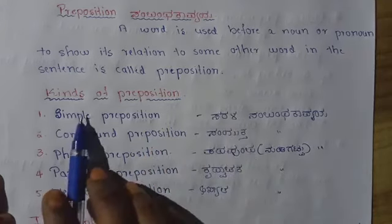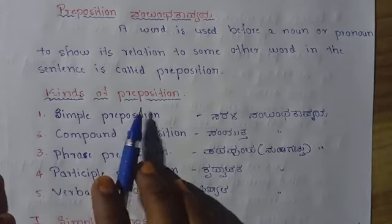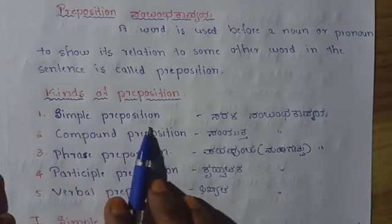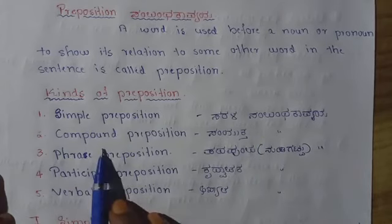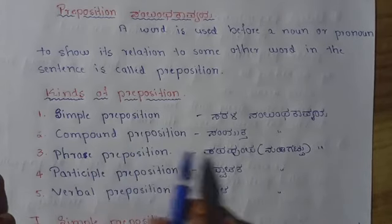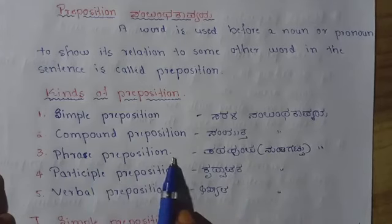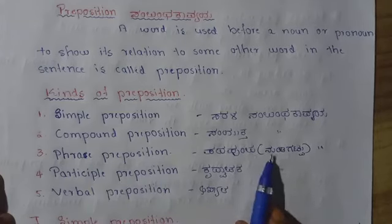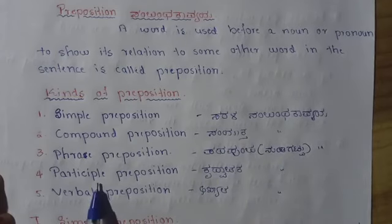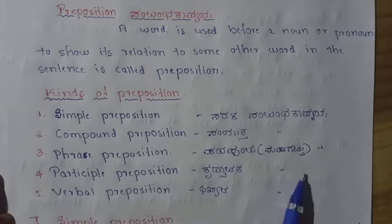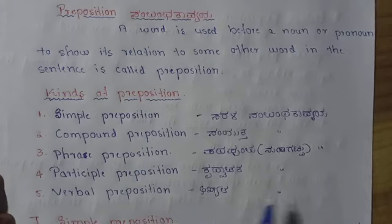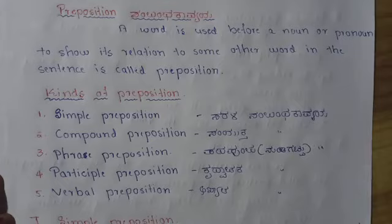Let us continue about the kinds of preposition. The five kinds are: first, simple preposition; second, compound preposition; third, phrase preposition; fourth, participle preposition; and fifth, verbal preposition.